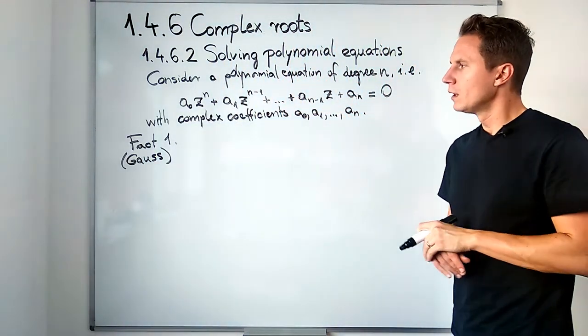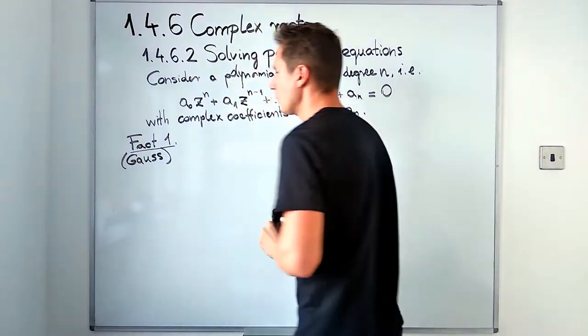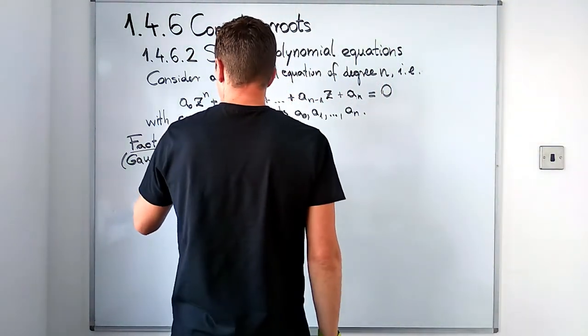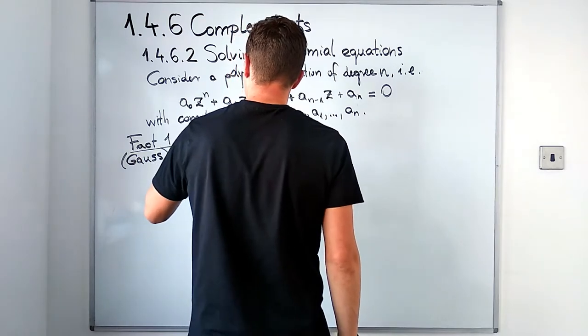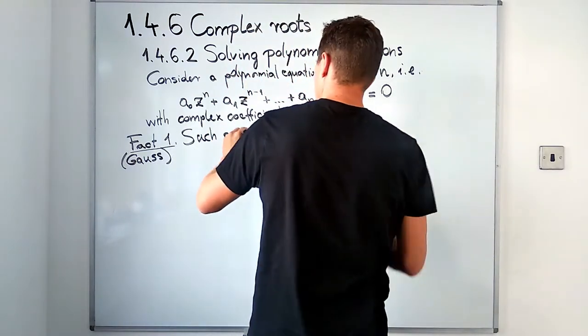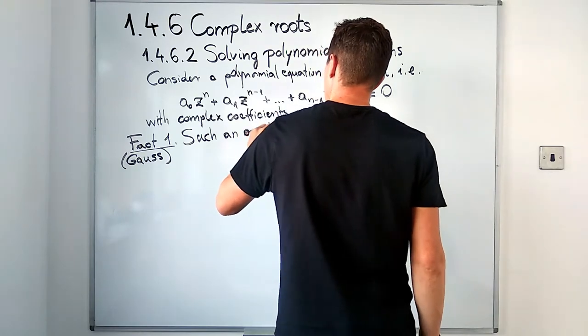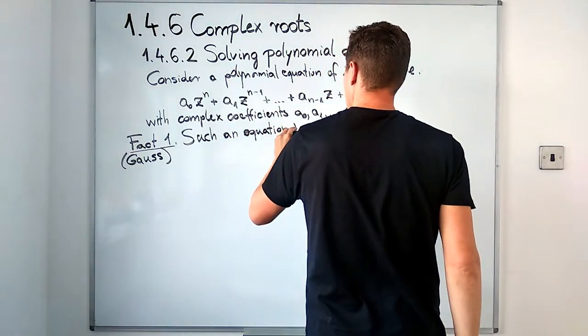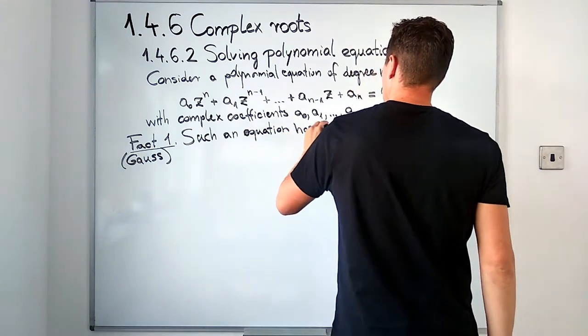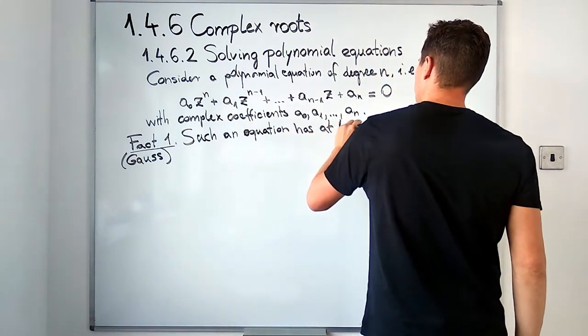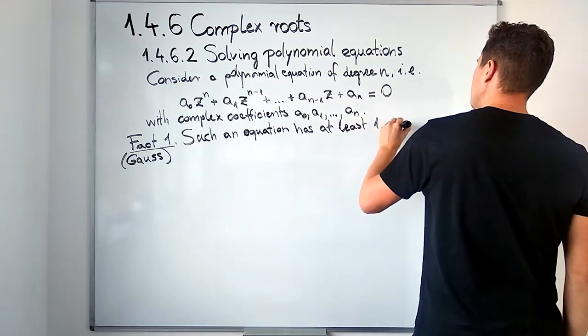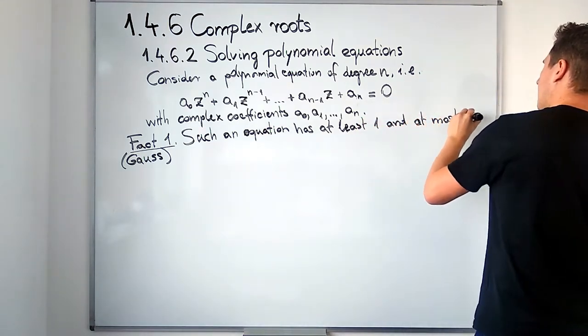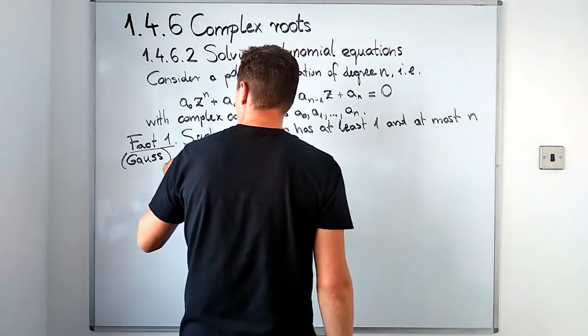So the first fact was proven by the German mathematician Gauss. Let's prove that such an equation as above will have at least one and at most n distinct complex solutions.